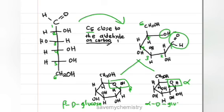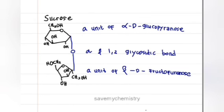Next, about sucrose. A unit of alpha-D-glucopyranose and a unit of beta-D-fructopyranose joined together. In sucrose, carbon 1 of alpha-D-glucopyranose bonds to carbon number 2 of D-fructopyranose by an alpha-beta-1,2-glycosidic bond.